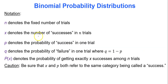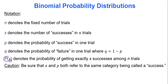Some notation we'll be working with: N is the number of trials, X is the number of successes we're looking for, P is the probability of a success, Q is the probability of a failure, and P(X) represents the probability of getting a certain number of successes among the trials.